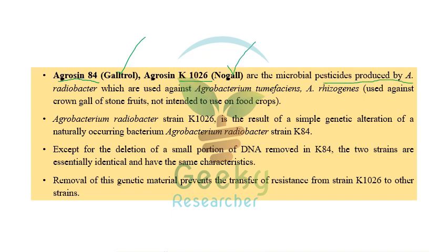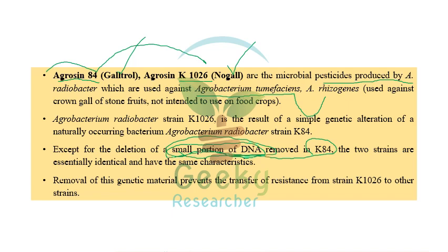Agrobacterium tumefaciens, now called Agrobacterium rhizogenes, normally causes crown gall in stone fruits such as apples. The two strains — Agrobacterium radiobacter K84 and K1026 — are exploited specifically against it. Except for the deletion of a small portion of DNA in K84, the two strains are essentially identical and have the same characteristics. This DNA deletion is what allows Agrobacterium radiobacter K84 and K1026 to function as biocontrol agents.